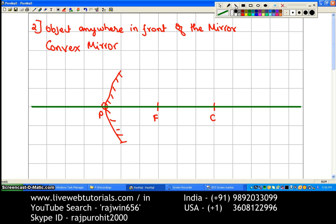Okay, now I am going to draw the object. Okay. Now this object is anywhere in front of the mirror. Okay, so I am just drawing the object like this. Okay, this is placed anywhere in front of the mirror.